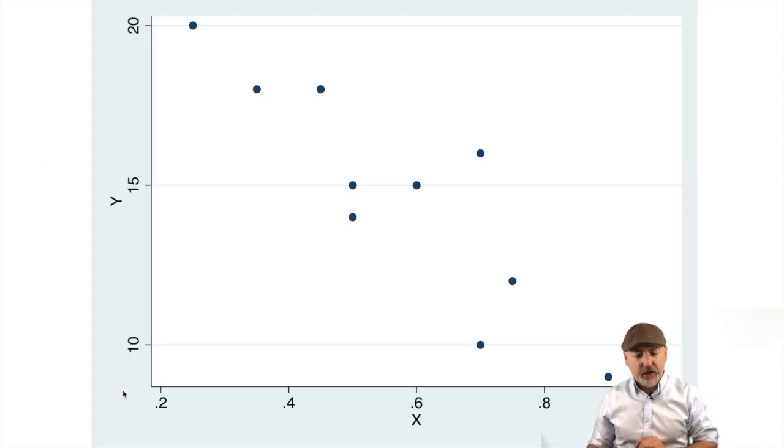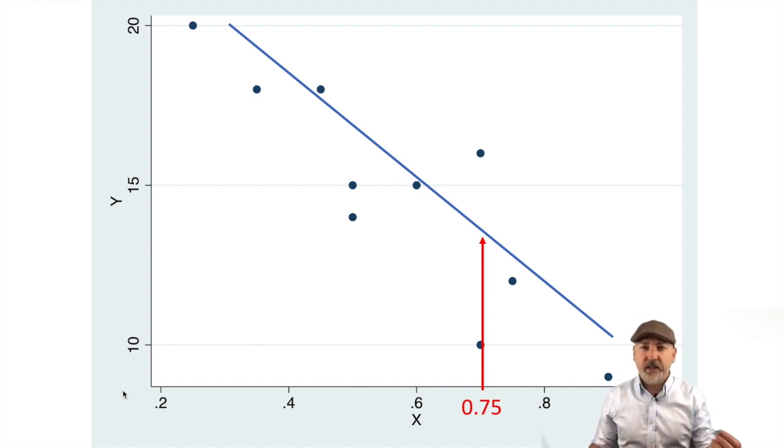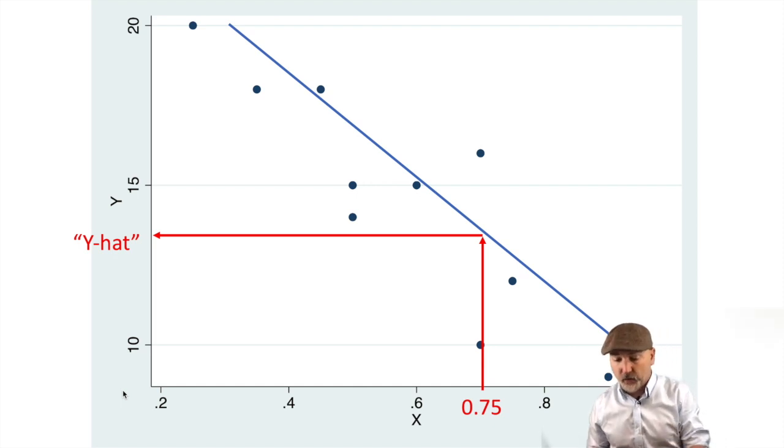Let's get the visual here. This is the scatterplot of our little example data, y on the y-axis, x on the horizontal axis. That's roughly the best-fit line that we would expect to see. If we pick an observation when x equals 0.75, what we want to know is what is the predicted value, and that's going to be the height of that best-fit line.